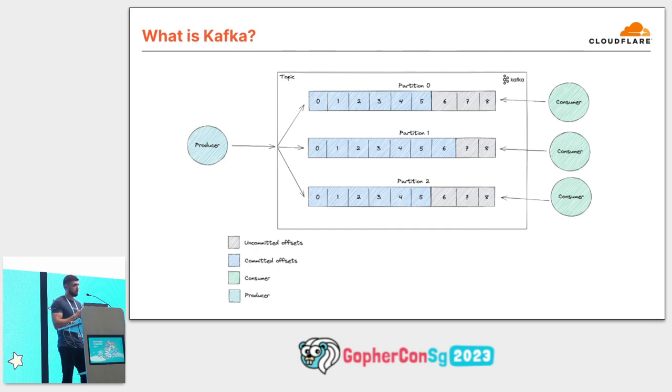At Cloudflare, we use Sarama, which is a Go client for Kafka. This was built by Shopify originally and is now maintained by IBM.